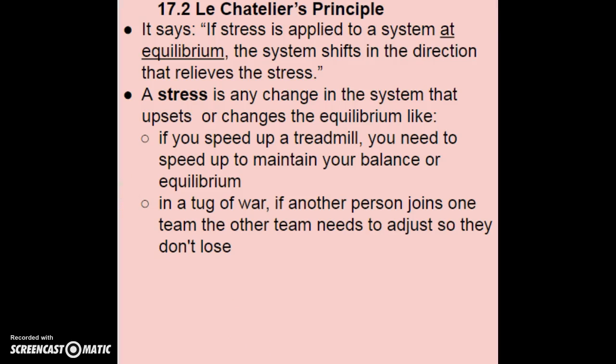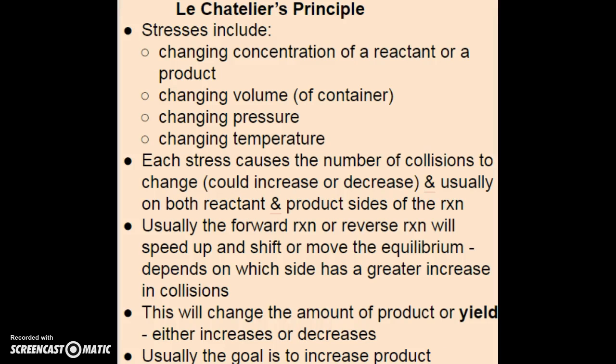Stresses on a chemical system would be things like changing the concentration of a reactant or product — and that could be an increase or decrease — changing the volume of the container, which is then going to change the pressure, or you could change the pressure, which will change the volume. Those two go hand in hand; you can't change one without the other. And then changing temperature, which again could either increase or decrease.